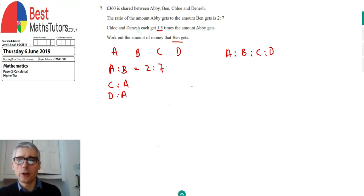So we're told that Chloe and Dinesh get 1.5 times the amount that Abby gets. So if I create a little equation there, I can say that C is equal to 1.5 times what Abby gets. And also we could do the same for Dinesh. We could say that D is also equal to 1.5 what Abby gets. And so if I multiply both sides of this one by 2, I can get rid of the decimal.